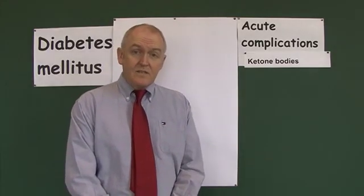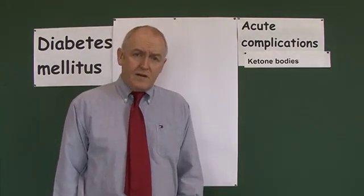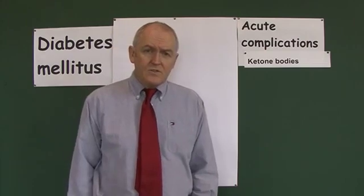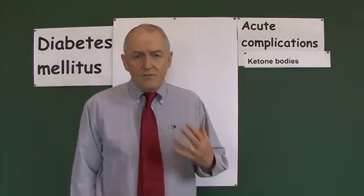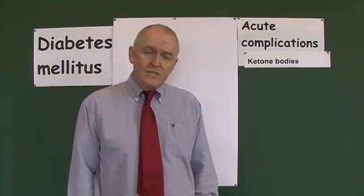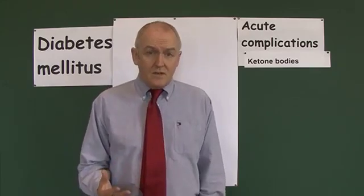Now, diabetic ketoacidosis is an acute complication of type 1 diabetes, and it occurs when there is a deficiency of insulin. So if there's not enough insulin for whatever reason, then ketone bodies will start to accumulate in the blood. There will be a ketoacidosis.